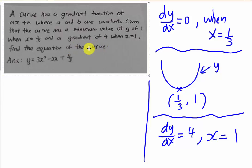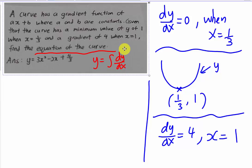To find the equation of the curve, the only way is to integrate the gradient function. Whenever they ask you to find the equation of the curve, the first thing is: y equals the integral of dy/dx. The problem is my gradient function has two unknowns, ax plus b. So in order to find a and b, I need two pieces of information to form two equations.